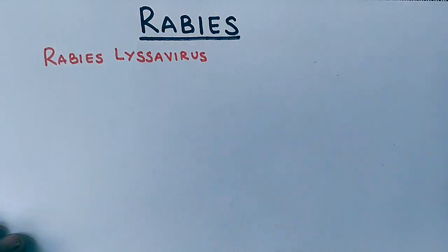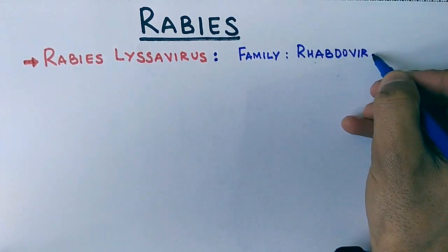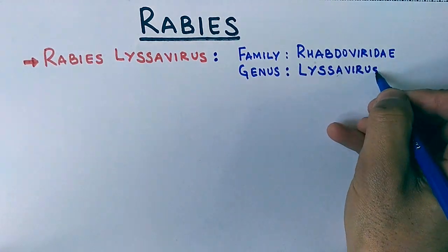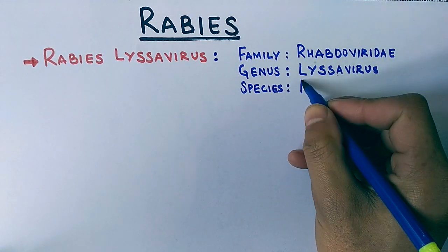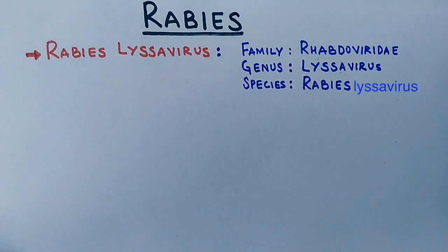It's from the family Rhabdoviridae, genus Lyssavirus, and species is rabies lyssavirus. Lyssavirus here is a type species concept where a genus name is written with species, that's why it's written with species lyssavirus, so we call it rabies lyssavirus.